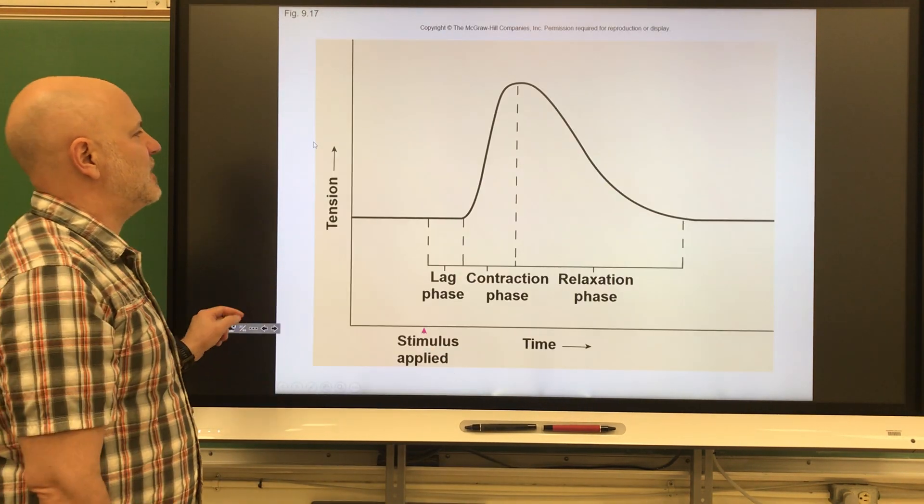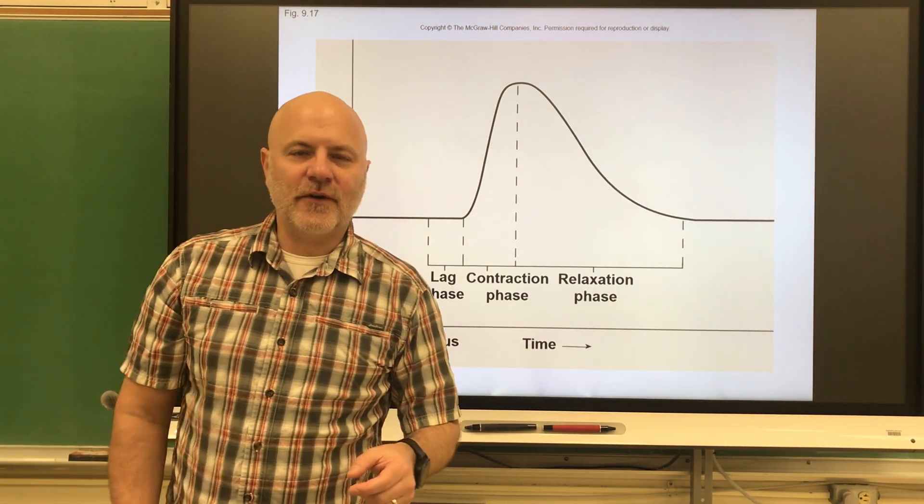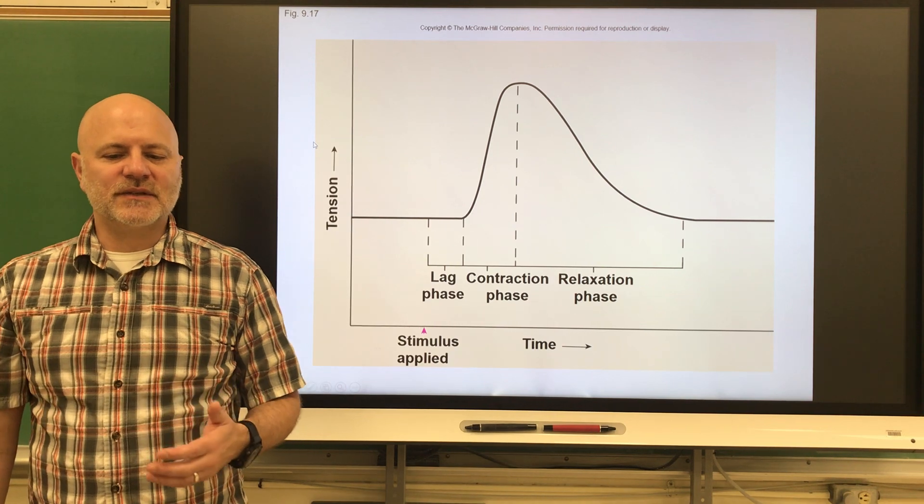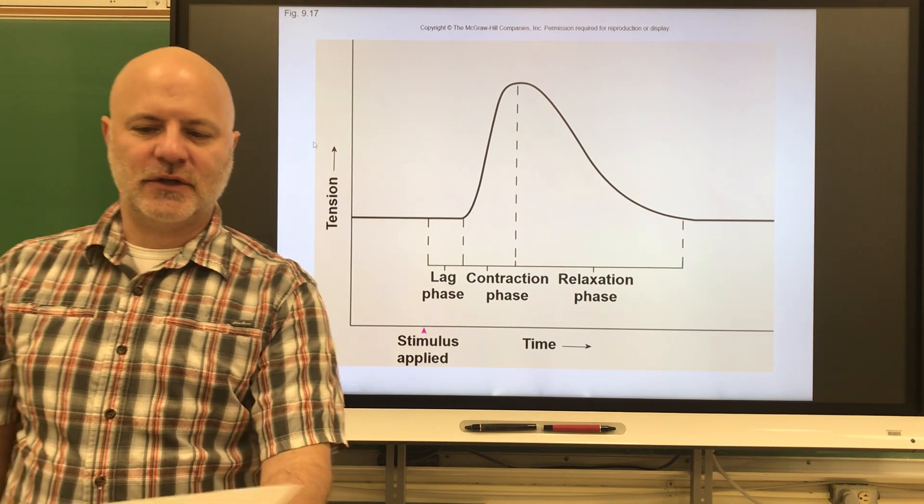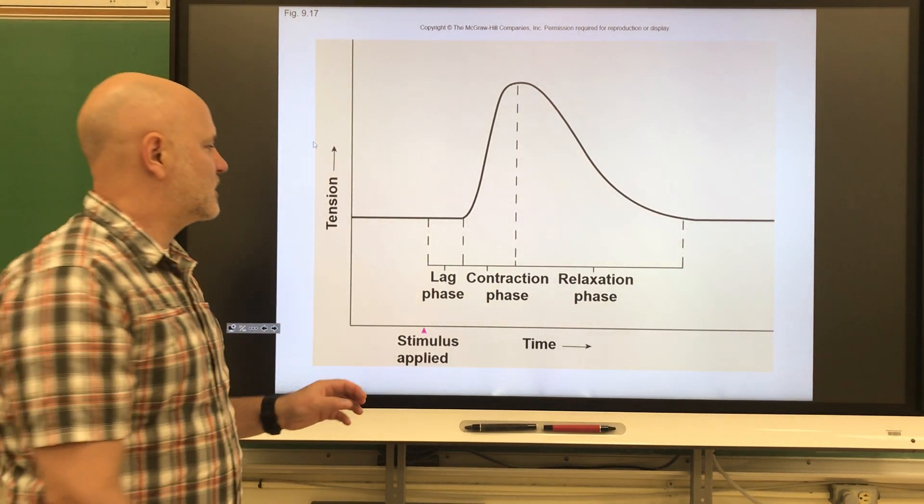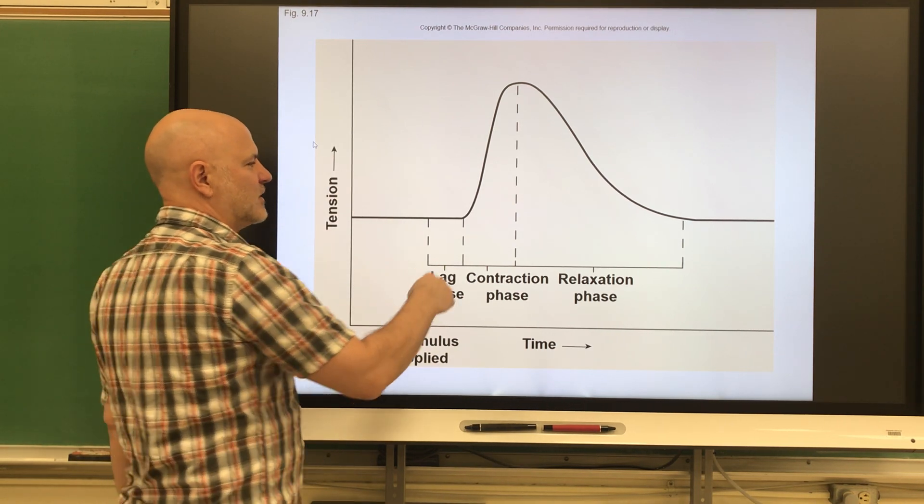Let's take a look at types of contraction. The first is a twitch, a single stimulus that causes a muscle cell to contract and relax. This is showing tension or contraction.